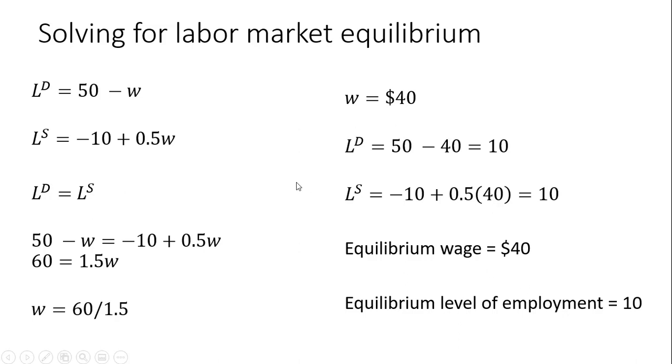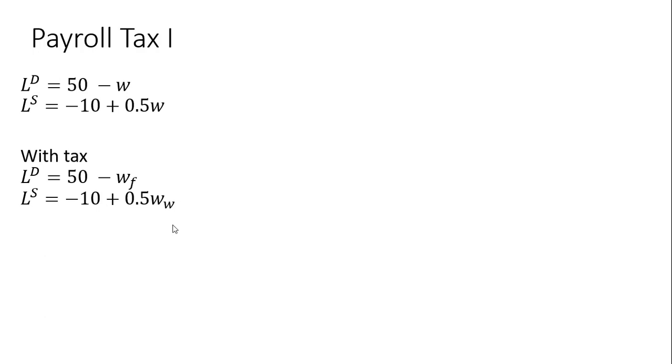Now let's see what happens when we put a payroll tax in this market. Example one. First thing we're going to recognize is that with a payroll tax, the wage paid by firms, w subscript f, will not equal the wage of workers. There is going to be a wedge between what firms pay and what workers receive once we take into account the payroll taxes.